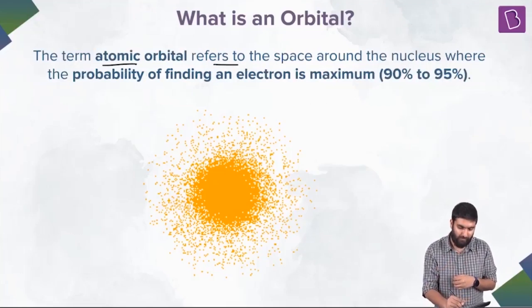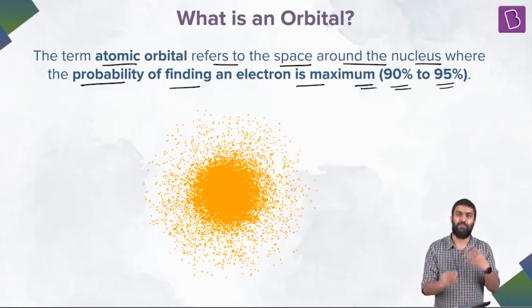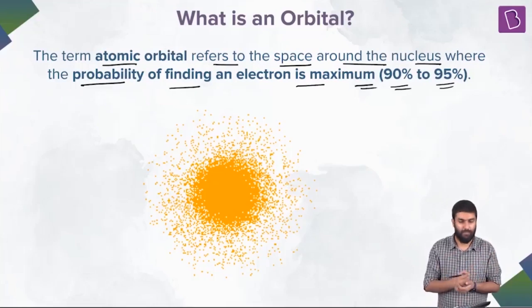The term atomic orbital refers to the space around the nucleus where the probability of finding an electron is maximum, 90 to 95 percent.